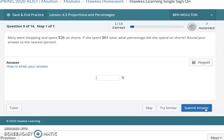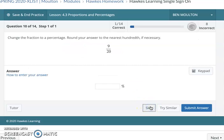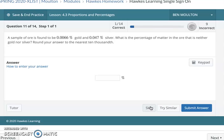Mary went shopping and spent $26 on shorts. She spent $61 total, what percentage did she spend on shorts? That one's pretty easy. You just divide and then multiply by 100 again. Next up, change a fraction to a percentage. Not bad. Just divide, multiply by 100. This one could be interesting.